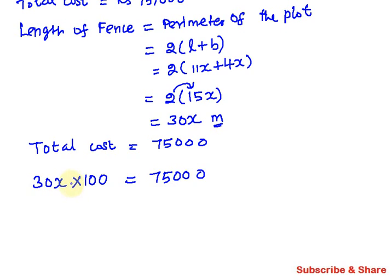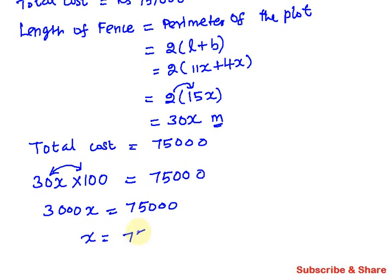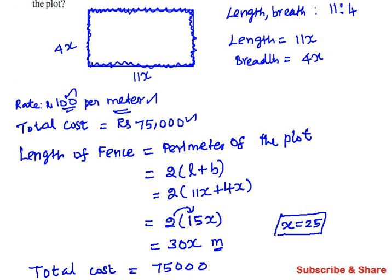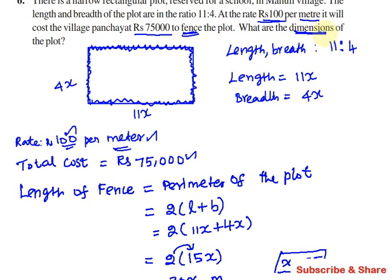Total cost equals fencing length multiplied by rate. So 30x meters × ₹100 = ₹75,000. That gives 3000x = 75,000. Dividing, x = 25.